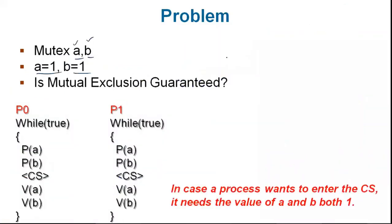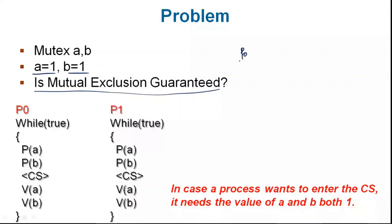Now let's see this next question. What is happening here? There are two mutual exclusion variables A and B, both initialized to 1. We are going to check whether mutual exclusion is guaranteed here. P0 process has statements 1, 2, 3, 4, and 5 — statement 1 is P(A), 2 is P(B), 3 is the critical section, 4 is V(A), 5 is V(B). And P1 process has statements 6, 7, 8, 9, and 10.